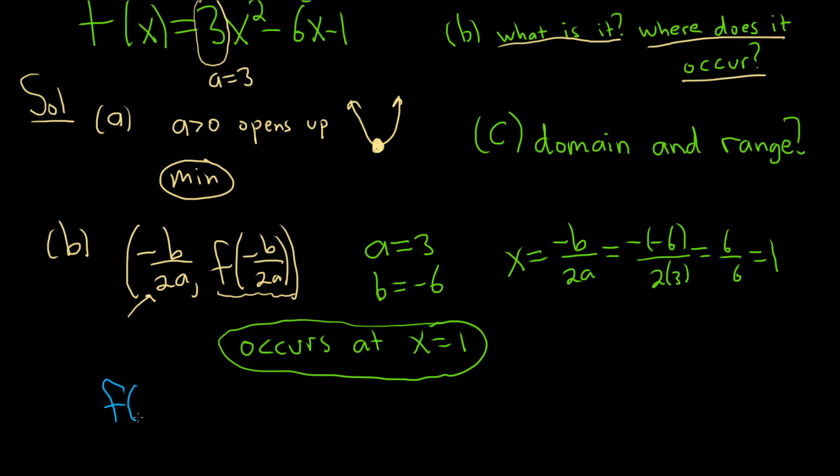So you just basically take this number, and you plug it into your function. So f of 1, that's this piece, right, because this piece is 1, is going to be 3 times 1 squared minus 6 times 1 minus 1.